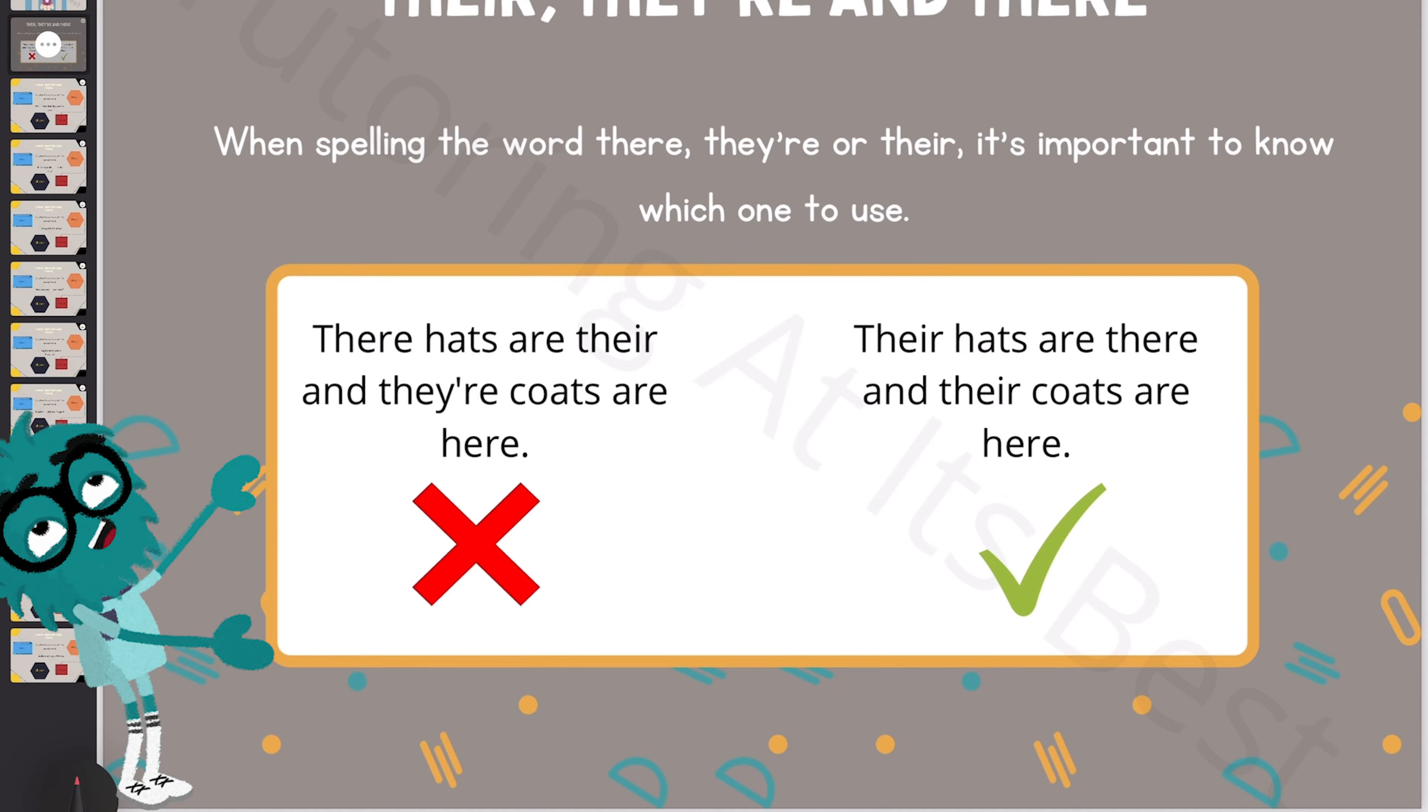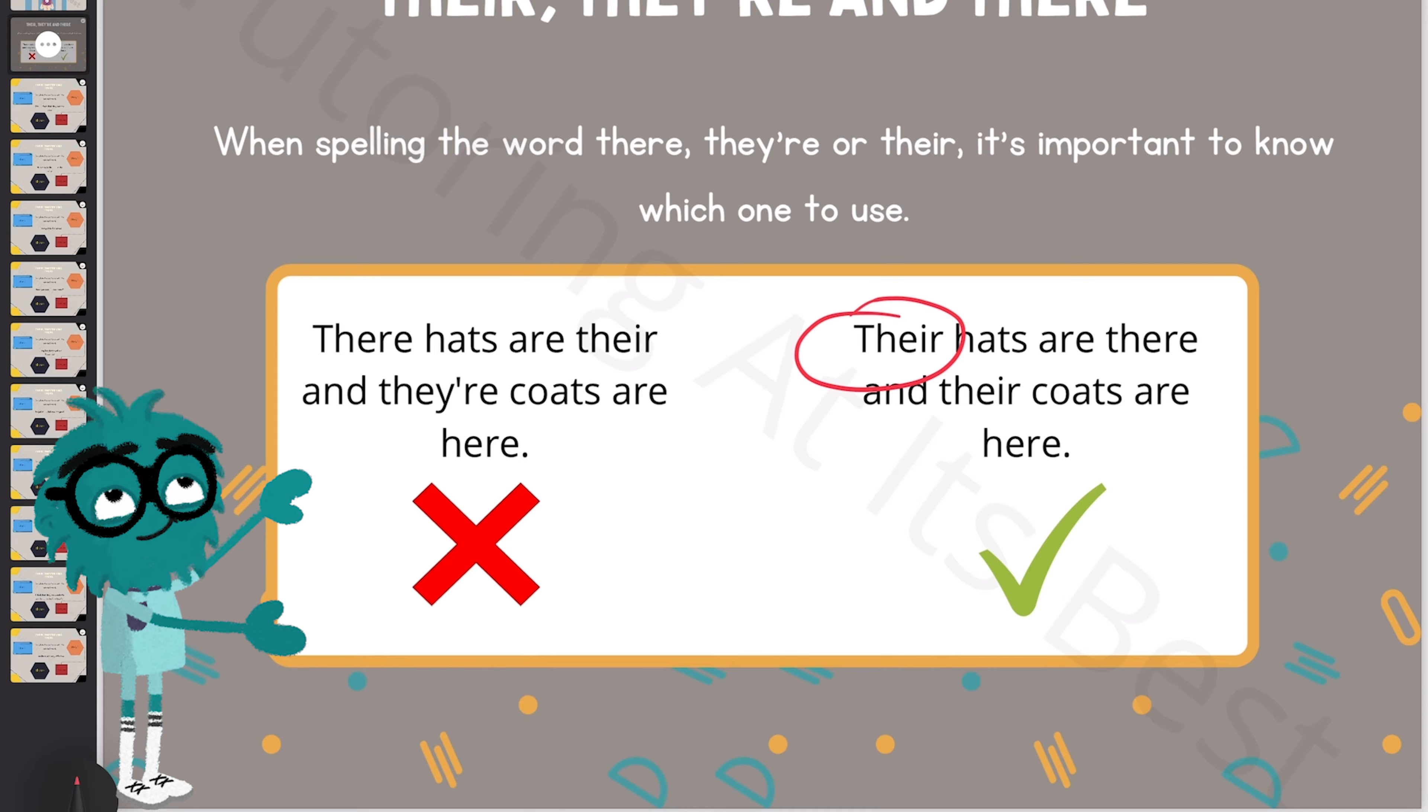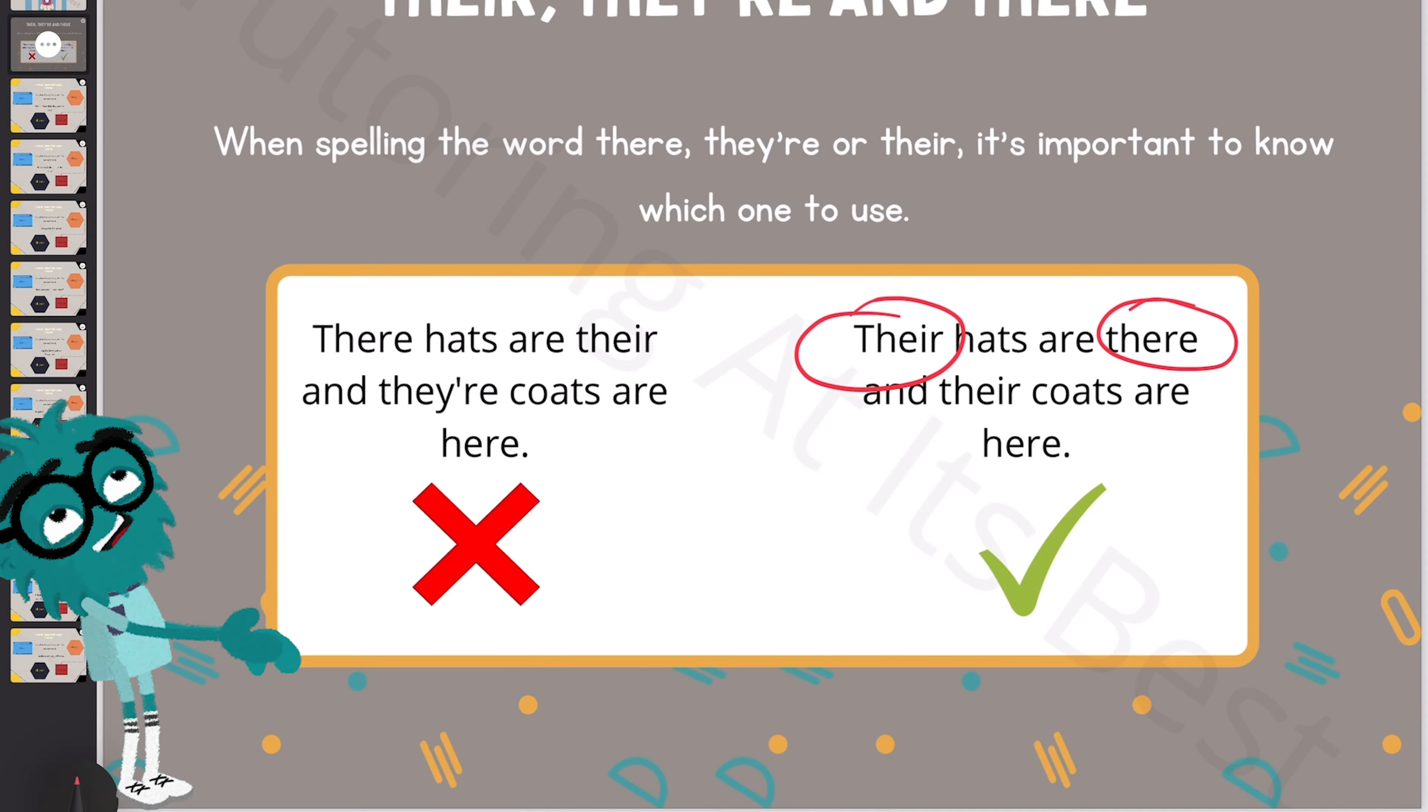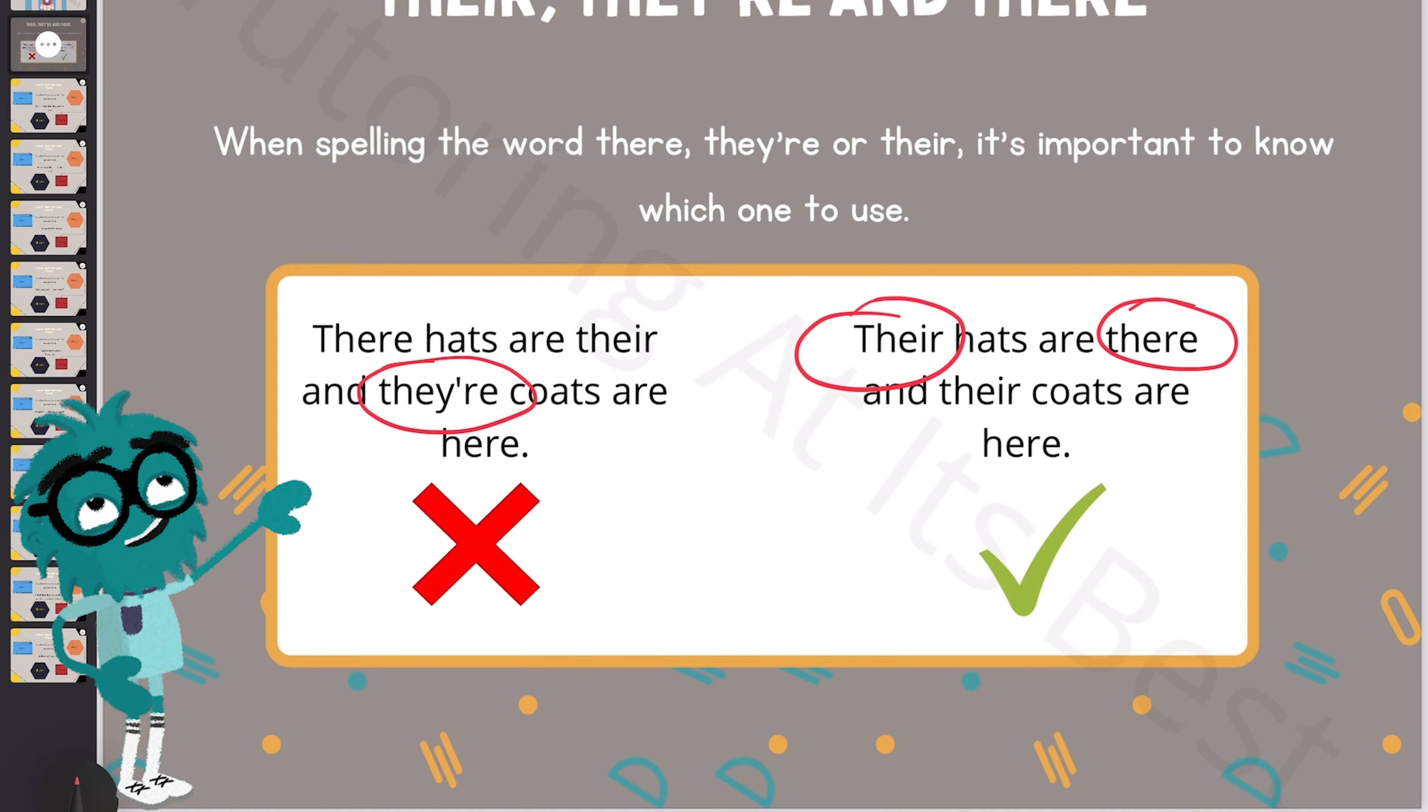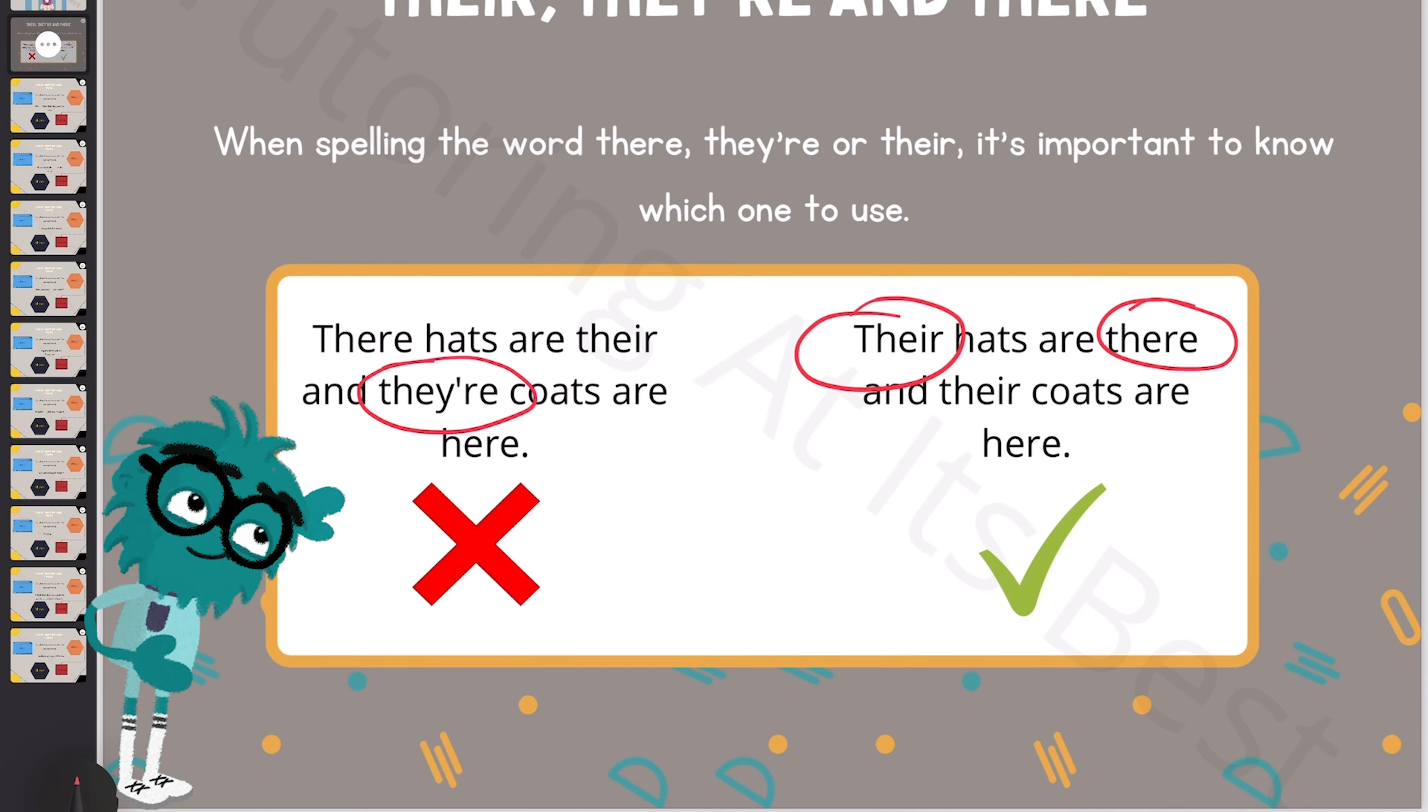Now, their is a possessive adjective and shows that they own something. There is an adverb and is used to indicate a place or position. And finally, they're is a contraction of they are. So it's very important to get these three word meanings fixed in your mind.